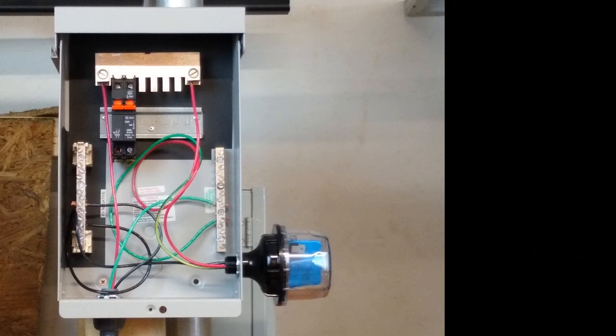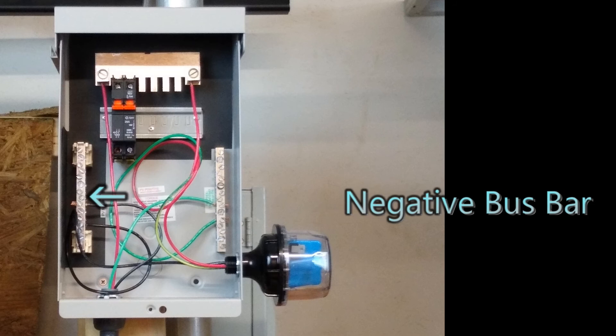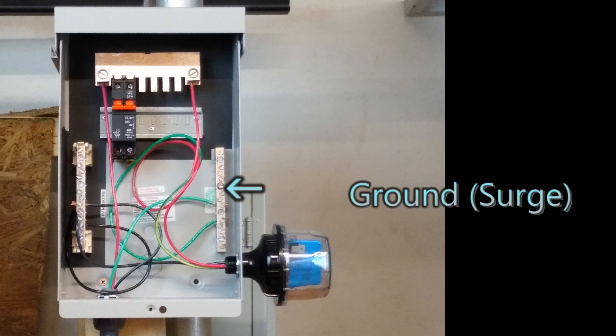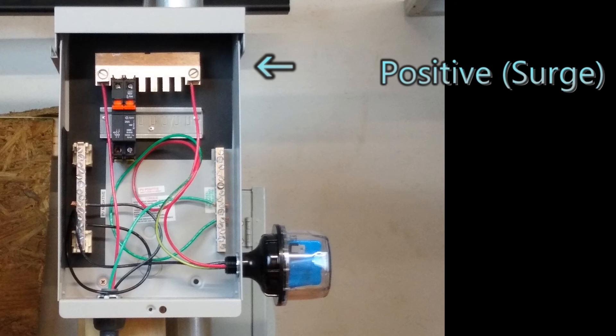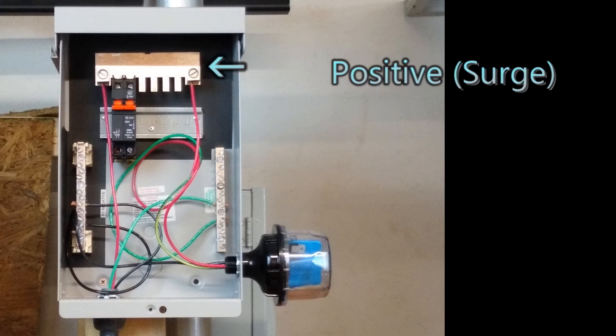So this is a midnight solar surge protection goes through one of the knockouts on the side of the box. So then it connects in three points. It has a negative wire, which connects to the negative bus bar. It has a ground wire, which connects to the ground bus bar. And then it has a positive wire and you want to connect that up on the PV output circuit. That will protect all of your source circuits.